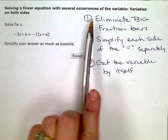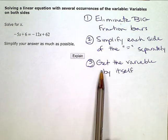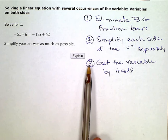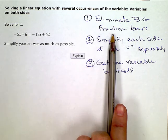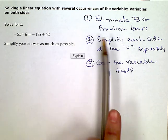I like to think through three big steps, three major phases as I solve equations. The first one is to eliminate any big fraction bars. I don't even have fractions in this one, so I move on to step two.